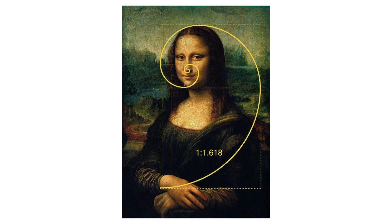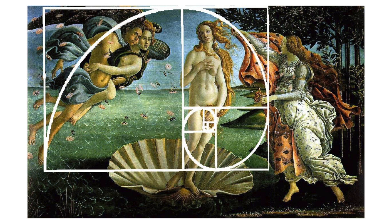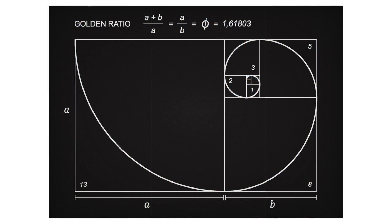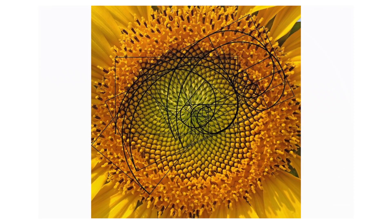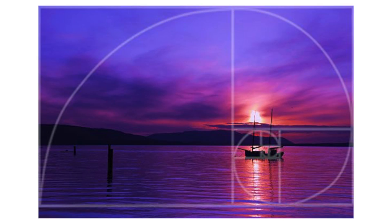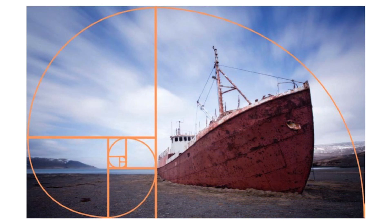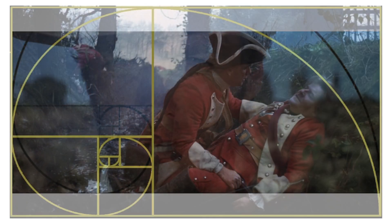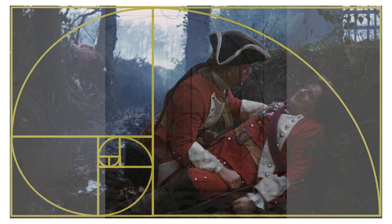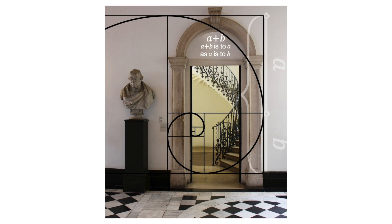Famous works of art such as the Mona Lisa, The Last Supper and The Birth of Venus, among others, are all rumored to have been composed based on the Golden Ratio. In fact, the Golden Ratio has been called Nature's Number because it is said to appear everywhere throughout nature, from the Nautilus Shell to the Sunflower. Using the Golden Ratio as an element of design is a great way to achieve a strong composition in an organic way, drawing viewers to your images or scenes and ensuring viewer interest from the beginning.